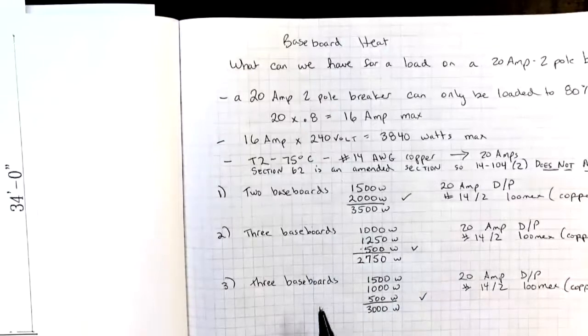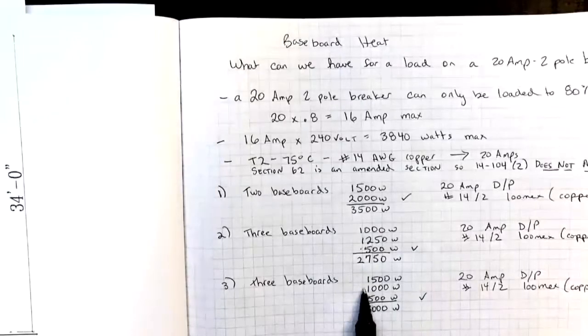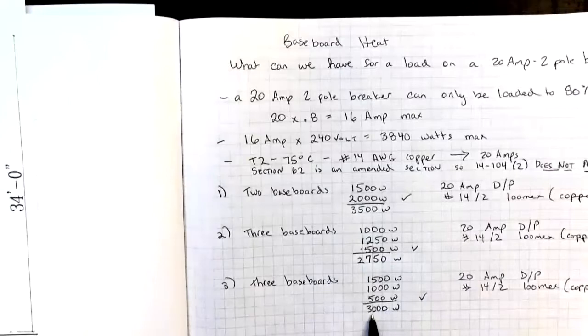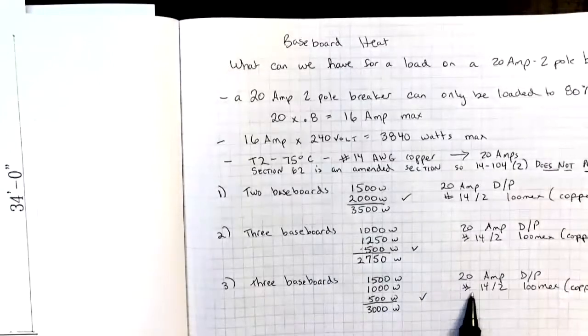Our third example was the three baseboards. This was in the master bedroom, the 1500 watt and the 1000 watt. And in the bathroom, we had a 500 watt. Adds up to 3000. So again, we can use a 20 amp double pole breaker and number 14 Lumex.